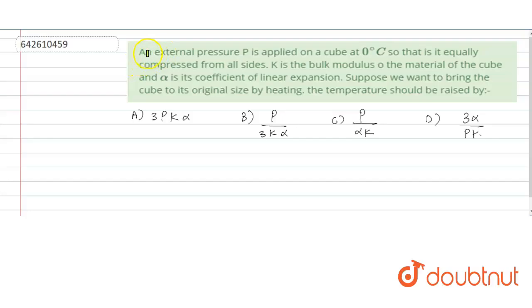Hello, the problem states that an external pressure P is applied on a cube at 0 degree Celsius so that it is equally compressed from all the sides. K is the bulk modulus of the material of the cube and alpha is the coefficient of linear expansion. Suppose we want to bring the cube to its original size by heating. Now we have to find the temperature should be raised by what amount.